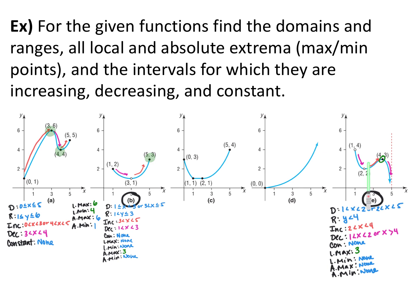Local max: the graph goes from increasing to decreasing at the point (4, 3), so the local max is 3. Even though the graph goes from decreasing to increasing at another point, that point doesn't exist due to the hole, so there is no local min. For absolute max, that highest point is also a hole, so there is no absolute max. The graph goes down to negative infinity, so there is no absolute min either.